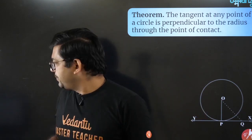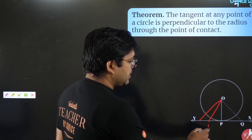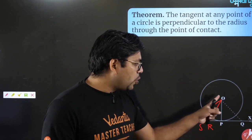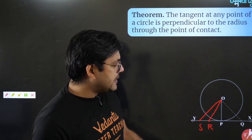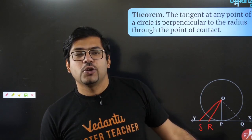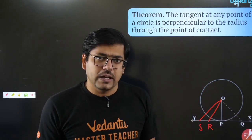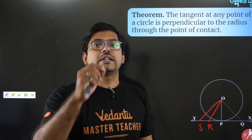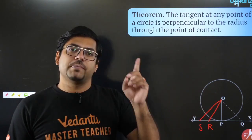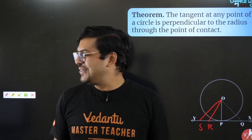For the proof, you draw multiple lines from center O — OQ, OR, OS, OT — and then show that OP is less than OQ, OP is less than OR, OP is less than OS, meaning OP is the smallest distance from point O to line XY. Since the smallest distance is always the perpendicular distance, OP is perpendicular to line XY.